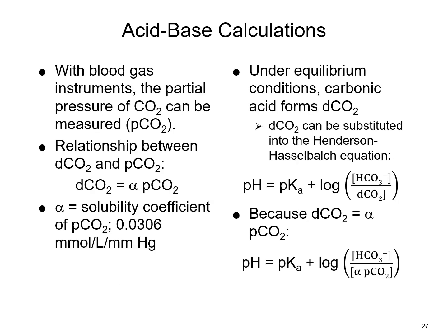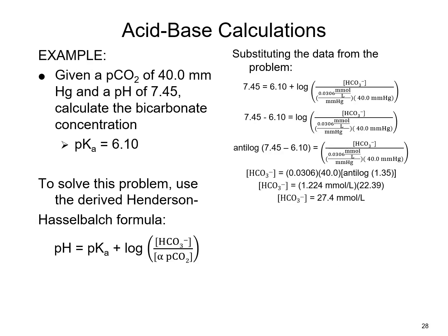Blood gas instruments measure the partial pressure of CO2 as pCO2. There is a relationship between bicarbonate and pCO2 involving the solubility coefficient of pCO2. Under equilibrium conditions, carbonic acid forms dissolved CO2, and dCO2 equals the solubility coefficient times pCO2. Plugging this in gives an equation for pH. In practice, we can use the measured pCO2 and pH values to calculate the bicarbonate concentration for a patient sample.